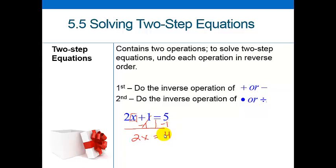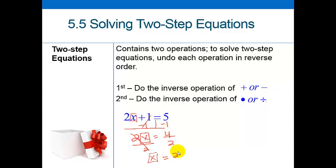That leaves me with 2x equals 4, because 1 minus 1 is 0 and 5 minus 1 is 4. Now I have to undo the multiplication by dividing by 2 on both sides. 2 divided by 2 is 1, leaving x by itself, and that equals 2, since 4 divided by 2 is 2. If I check: 2 times 2 plus 1 equals 5. I know a lot of you say you can just do that in your head, but it's going to get more difficult in algebra and you'll want to make sure you know how to write these down.